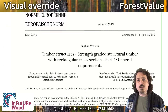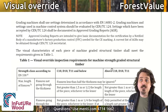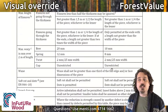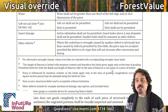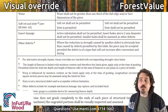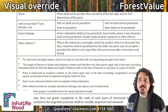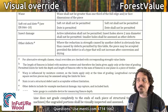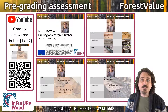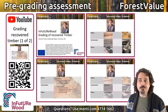The visual override step is like it is for new timber and serves the same purpose, but we need to include a few additional things that cover additional problematic defects that occur in recovered wood, such as drilled holes and cut notches. This builds on the sorting criteria developed in Work Package 4.